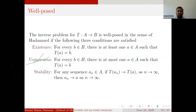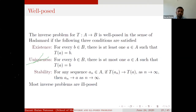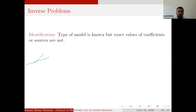For inverse problems, we use words like 'identification' — where the type of model is known but the exact value of the coefficient or source is not. For example, a diffusion coefficient, thermal coefficient, or source function may be unknown, and we try to identify them. Another type is 'incomplete data problems' — where initial or boundary values are missing and we need to reconstruct them. Description of the media by recovery of coefficients is a particular case of identification.